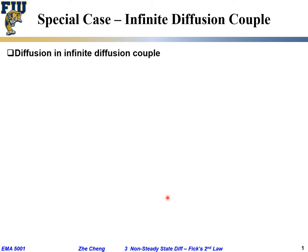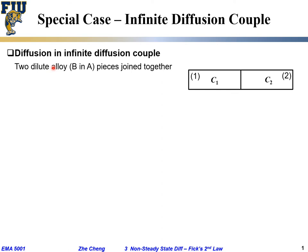A third example, another special case we call the infinite diffusion couple. A couple means two. We have two dilute alloys of B in A—two dilute alloys of solute B atoms within a matrix of A atoms. We join them closely together and heat them up to a finite temperature.